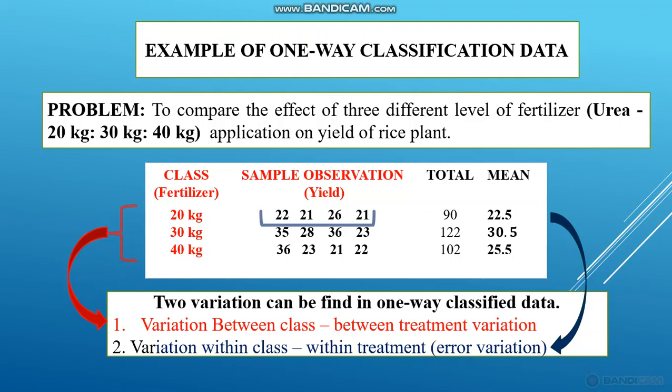For example, for a set of plants we are giving the same 20 kg of fertilizer, but the yield is different — 22, 21, 26, and 21. This variation is called error variation, because it is due to environmental factors. So, variation between classes is treatment variation and variation within classes is error variation. Here we are concerned only with the variation between classes — that is, whether treatment variation exists.